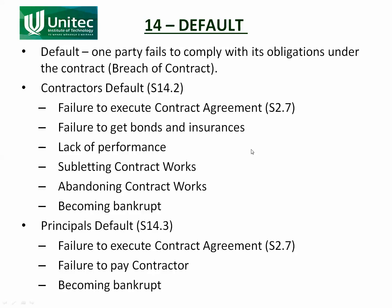The ways a contractor can default include: not executing the contract agreement — section 2.7 requires both parties to execute the agreement confirming this is their agreement, and if they don't do that they're in default. Another way is failing to get the required bonds and insurances. He is also obliged to perform properly and construct the contract works as set out in the contract documents. Poor quality work could be remedied by fixing it, or if he's incapable the engineer may decide to discharge the contract by default.